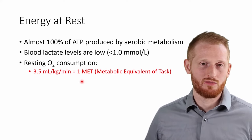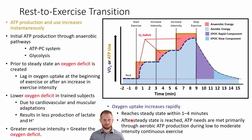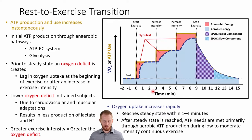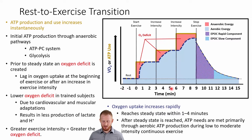Let me orient you to this figure. We have time on the x-axis, and on the y-axis we have either VO2 — oxygen consumed for aerobic metabolism — or ATP use, color coded here. The zero line is where we start exercise, so all the negative values counting back from zero represent the rest baseline period before exercise started. On the y-axis, the dotted blue line is our oxygen consumption line.